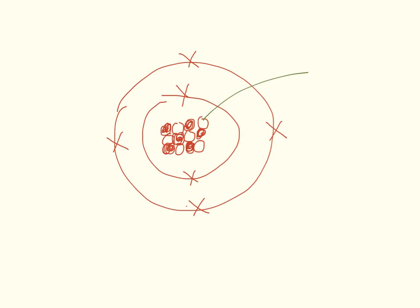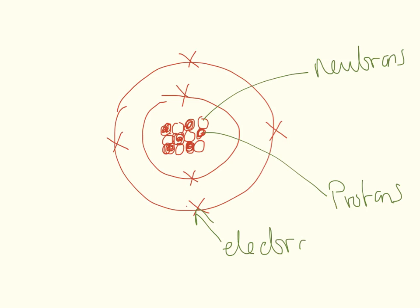Inside the nucleus here I have two different types of particles, some of them are colored, some of them are not colored. The colored ones are my protons and these are my neutrons, and then around the outside I have my electrons.